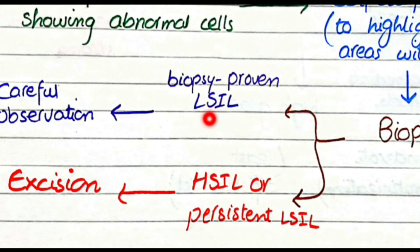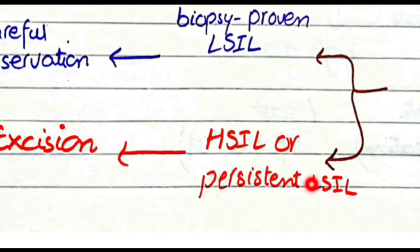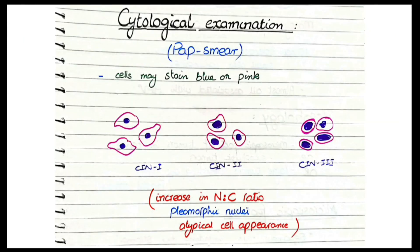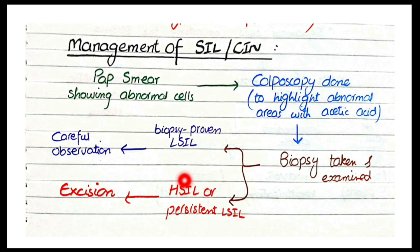If the biopsy confirms low-grade squamous intraepithelial lesion, no excision is needed — we only perform careful observation and repeat the test after a few years. However, if the biopsy shows high-grade squamous intraepithelial lesion, or if a previously detected low-grade lesion has persisted, we proceed to excision of these abnormal areas. In summary: Pap smear → if abnormal, colposcopy with acetic acid highlighting → biopsy → if low-grade, observe; if high-grade or persistent low-grade, excise.